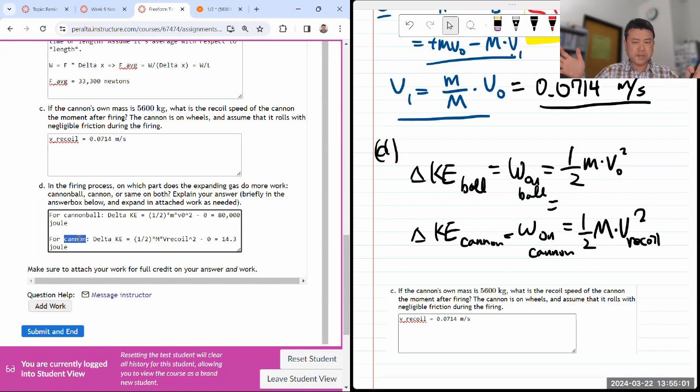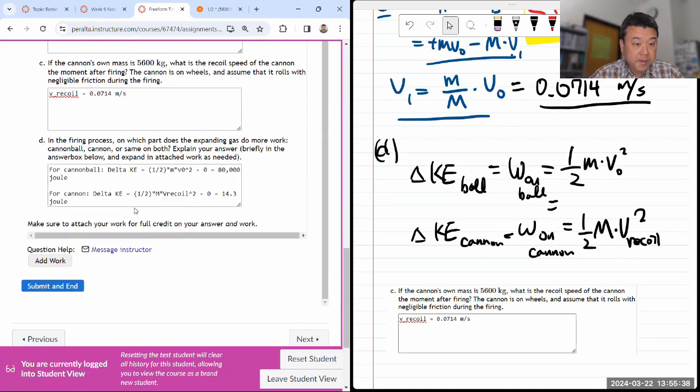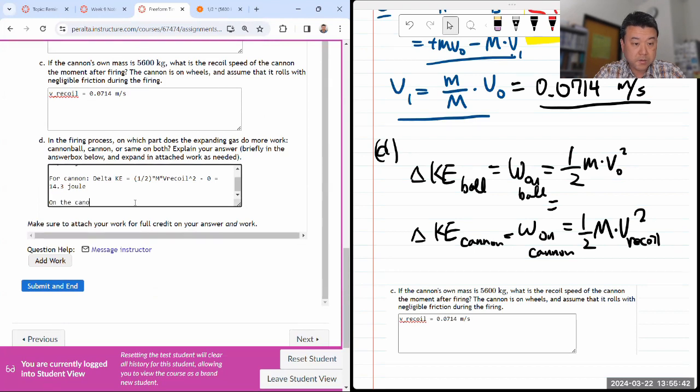Even though the mass term here one might think that should make sure it carries away a lot of energy, but when you apply the momentum conservation, this happens to increase with a decreasing mass. So I will say on the cannonball, the expanding gas does more work because there's more displacement.